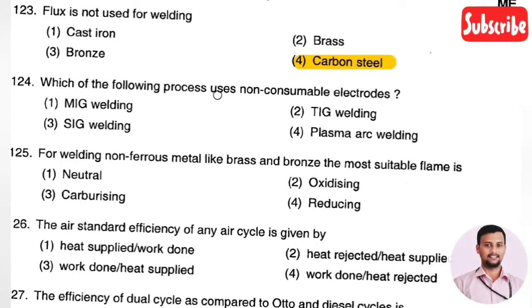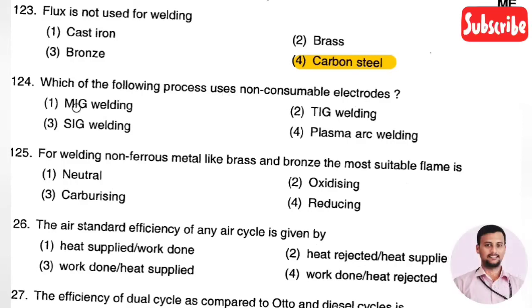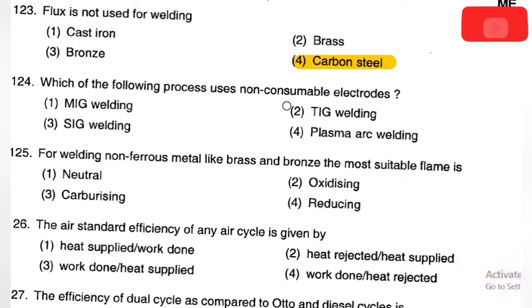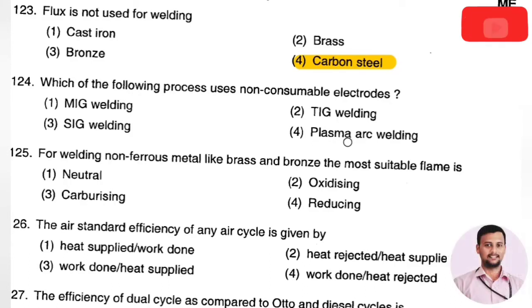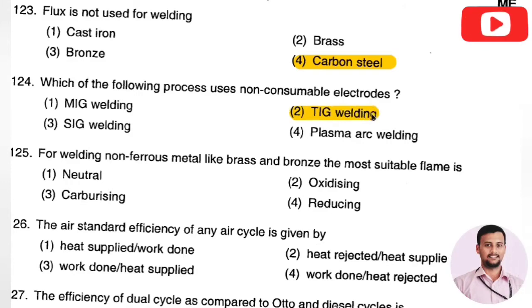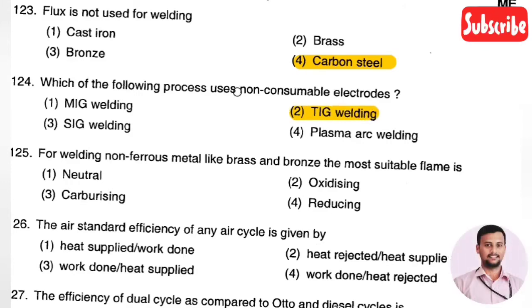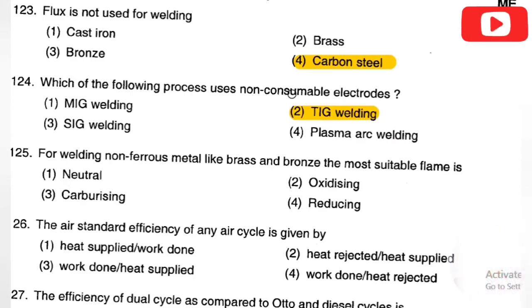The next question: which of the following processes uses non-consumable electrodes? Option 1: MIG welding, Option 2: TIG welding, Option 3: SIG welding, Option 4: plasma arc welding. The right answer is Option 2, TIG welding. In TIG welding, non-consumable electrodes are used.